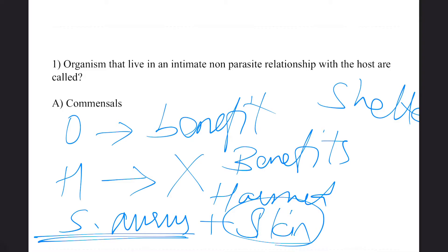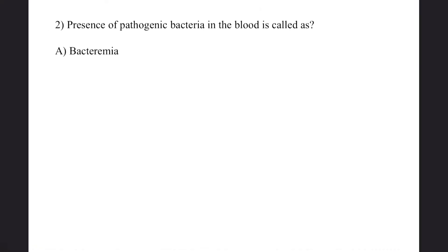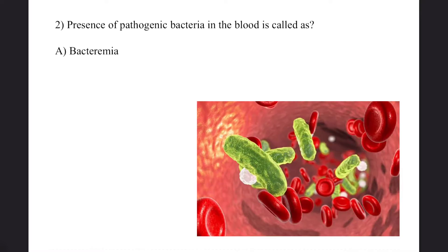Moving on to the next question. Second question: Presence of pathogenic bacteria in blood is called? Answer is bacteremia. Yes, why? Because human blood is considered as completely sterile.